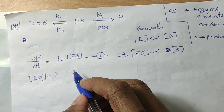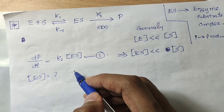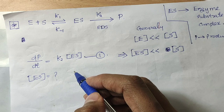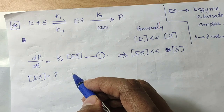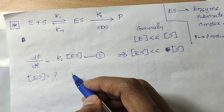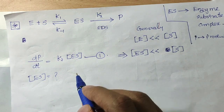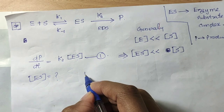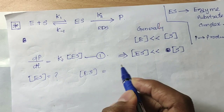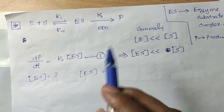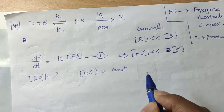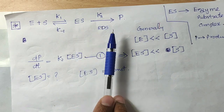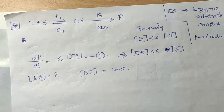Steady-state approximation, as discussed in the Lindemann unimolecular kinetics video, states that the concentration of an intermediate — here ES — is constant over time. That means the rate of formation of ES equals the rate of decomposition of ES. Formation is K1 times [E] times [S], and setting formation equal to decomposition gives us our second equation.